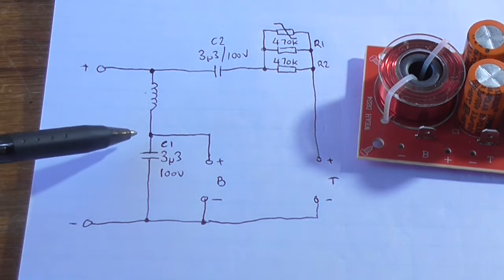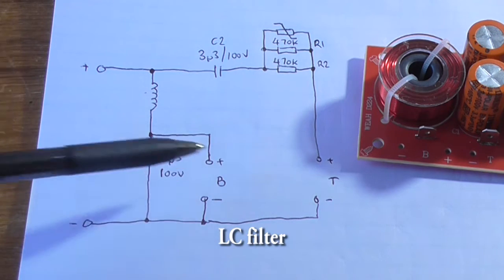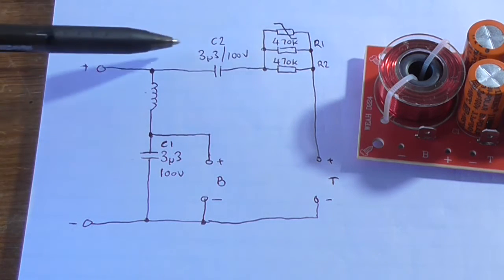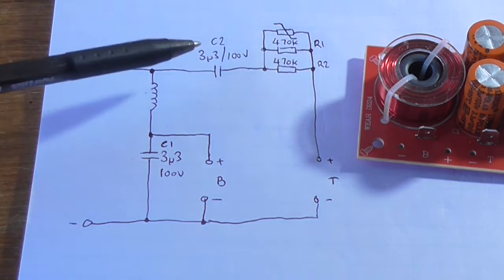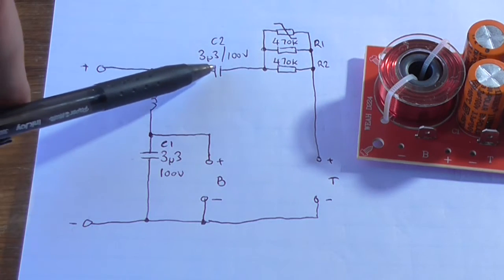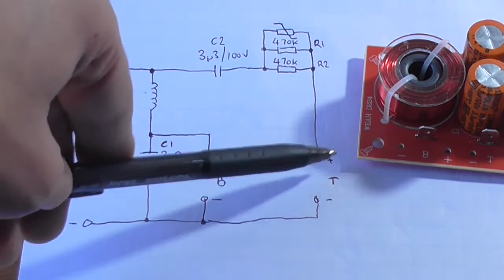We've got this inductor and C1 here, forming our low pass filter, going off to our base driver. And C2, R1, R2 and this PTC, or poly switch fuse, whatever you want to call it, forming a high pass filter, going off to the tweeter.